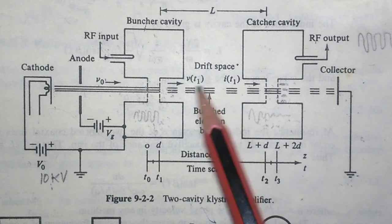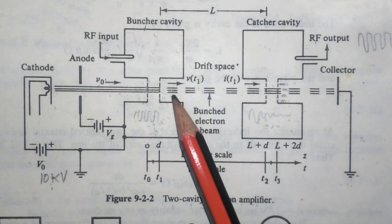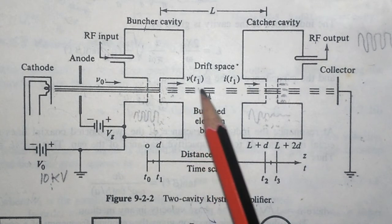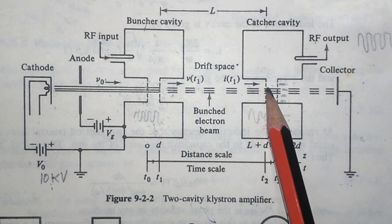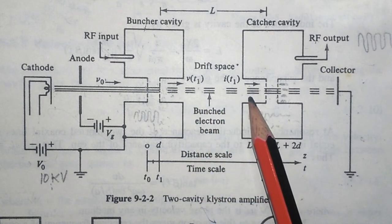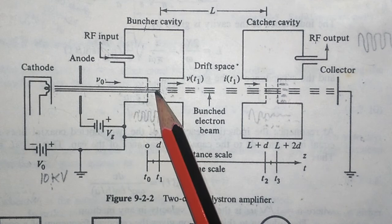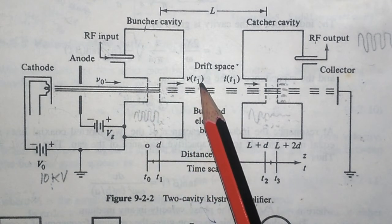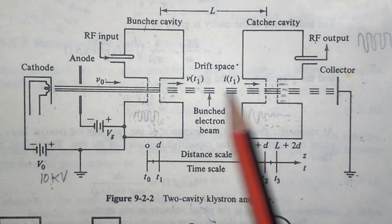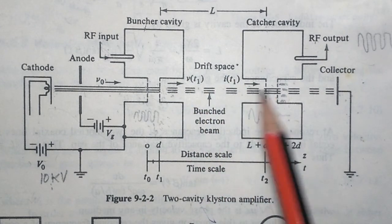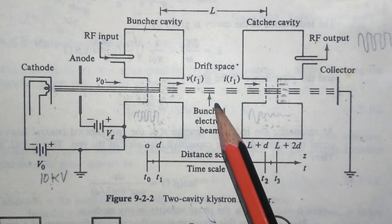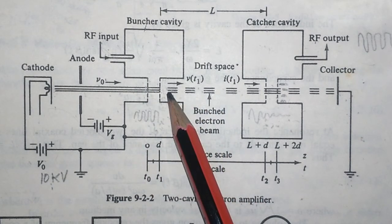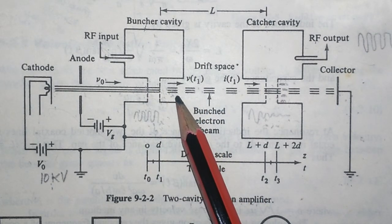Modulation means to change. Because of velocity modulation, the continuous stream of electrons is converted into a discontinuous movement — the current flowing in the drift space also changes. This is called current modulation. Velocity modulation results in current modulation, and as a result, bunches of electrons are formed after the electrons cross the buncher cavity gap.